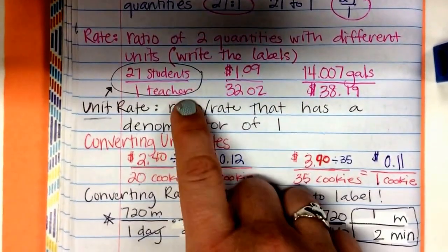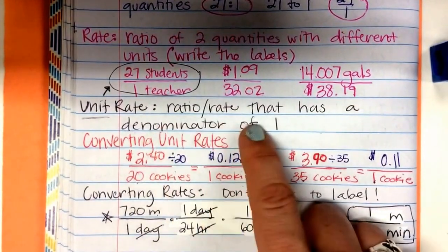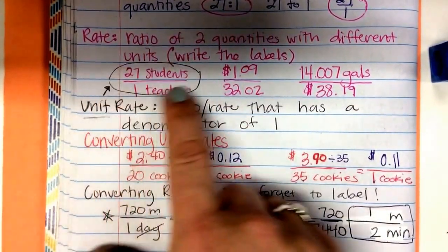A unit rate is a ratio or a rate that has a denominator of 1. So this was our only unit rate up here.